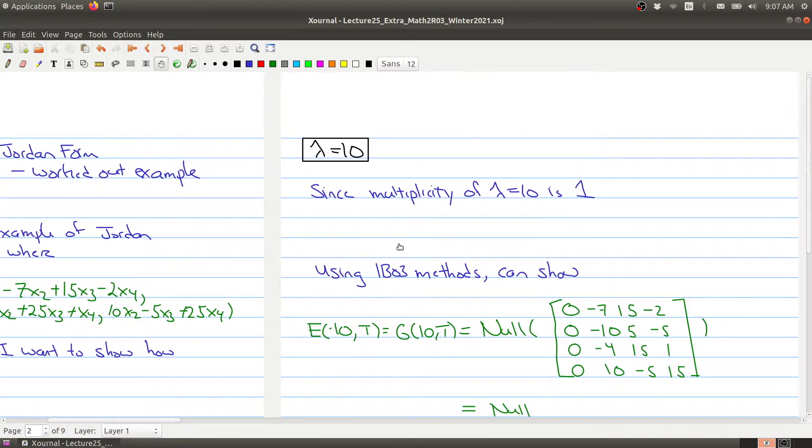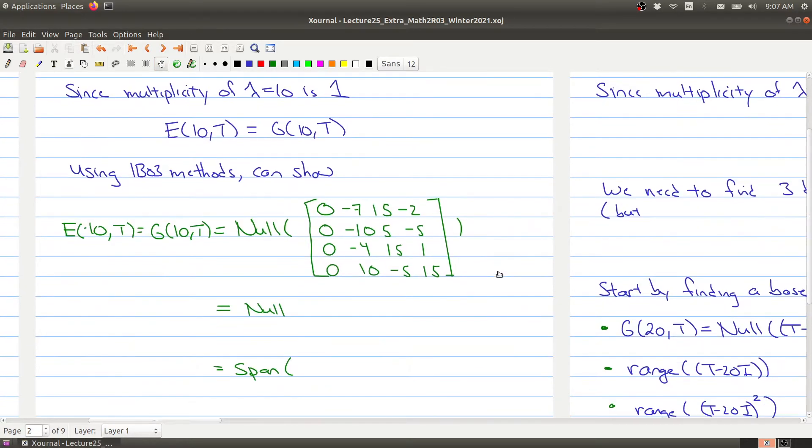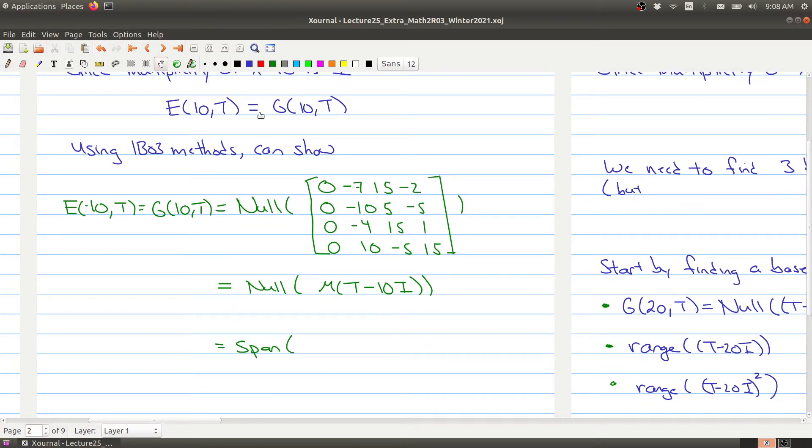Now, when we are looking at the eigenvalue of 10, everything is nice because the multiplicity is 1. And why does that make it nice? Well, in this case, because the multiplicity is 1, we get right away that the eigenspace of that eigenvalue is the exact same thing as the generalized eigenspace. And just using stuff you would have learned in your first linear algebra course, we know that the eigenspace, which is equal to the generalized eigenspace, is the null space of this matrix right here. And so just remember that this is the same thing as the null space of the matrix you get from taking the matrix of the operator, as t minus 10 times i. So that's where this matrix comes from.